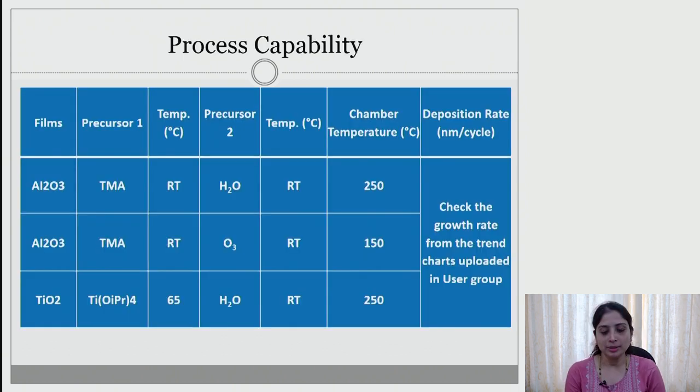Coming to standard recipes or process capability. We are having three standard recipes. We can deposit alumina or Al2O3 film at 250 degree using trimethyl aluminium and water as a precursor. We can also deposit alumina at quite lower temperature using trimethyl aluminium and ozone as a second precursor. Coming to a titania film we are using titanium isopropoxide as a first precursor and water as a second precursor at process temperature of 250 degrees.